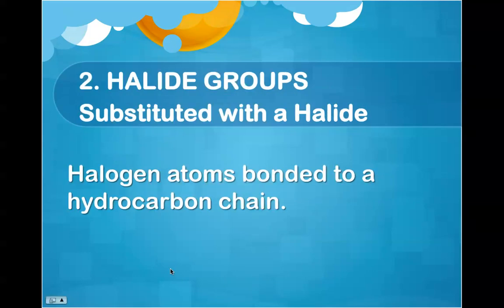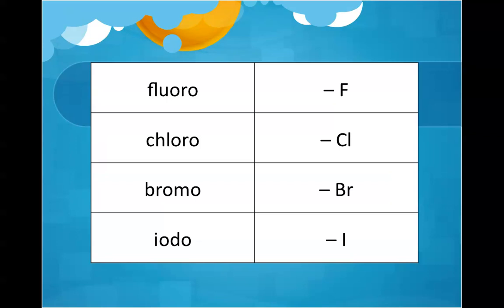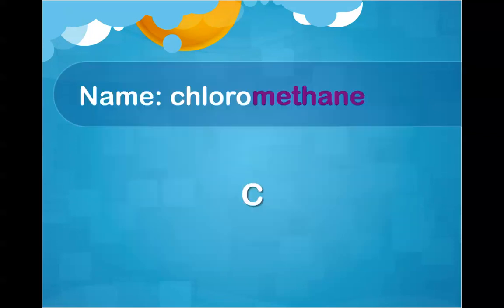Let's look at when a halogen has been bonded or substituted into a hydrocarbon chain. We're going to be using these names, which are on your reference table — you do not need to memorize fluoro, chloro, bromo, or iodo. However, we're going to be using them throughout, so I would make sure you take that out as a reminder of where to find them.